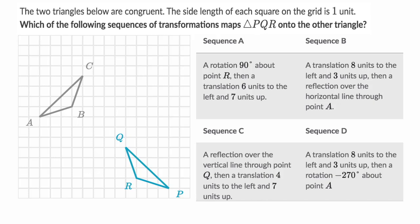We're told that triangle PQR and triangle ABC are congruent. The side length of each square on the grid is one unit. Which of the following sequences of transformations maps triangle PQR onto triangle ABC? We have four different sequences of transformations. Pause this video and figure out which of these actually maps triangle PQR onto ABC — it could be more than one.